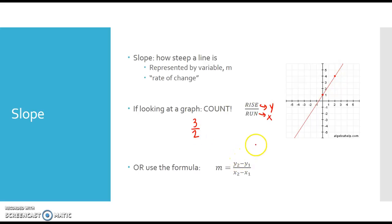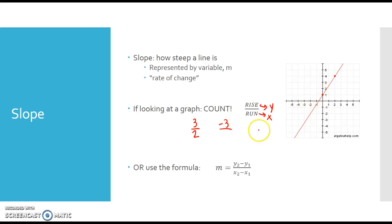You can also do it from the other point. If I did it from the other point, first I would go down 3 — going down is a negative — and then I would go left 2 — going left is a negative. A negative divided by a negative is a positive. So either way, you're going to get a slope of 3 over 2.